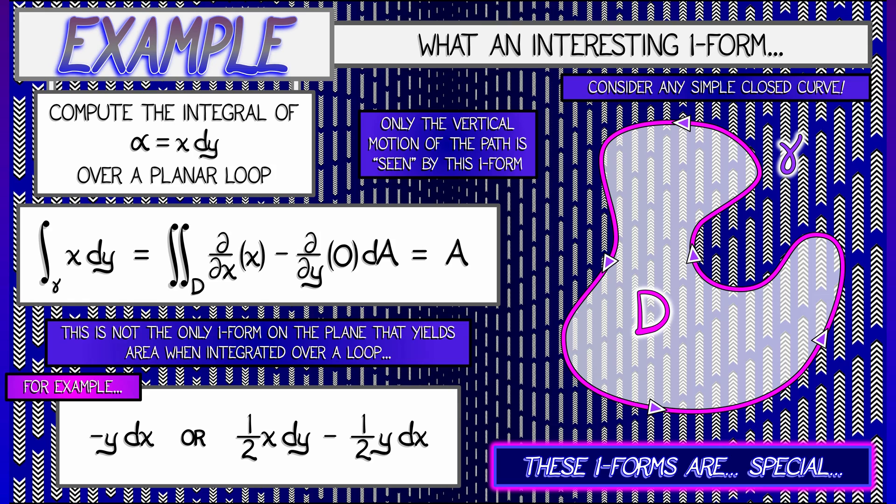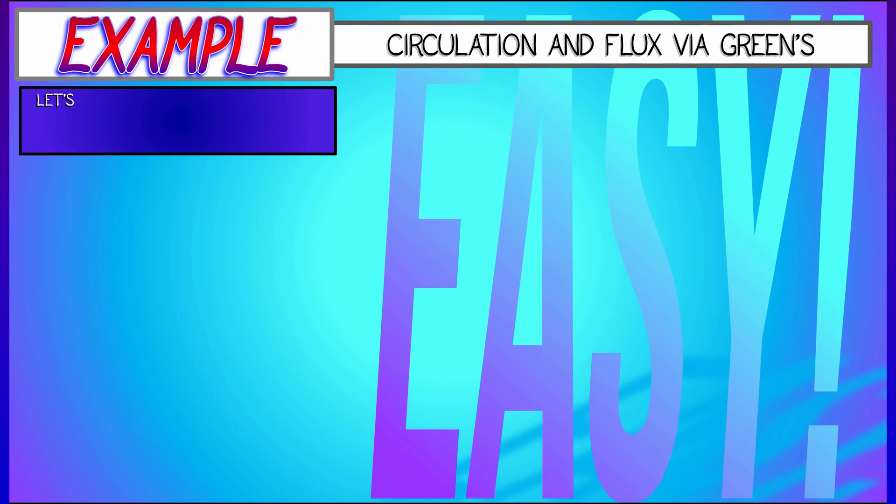Now, these are rather special sorts of one-forms. Not all one-forms have that property, and Green's Theorem is good for more than just computing area. Let's consider some examples involving circulation and flux.